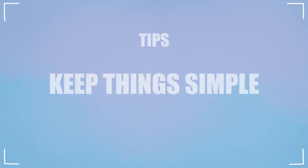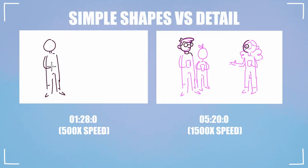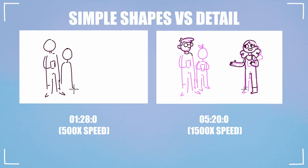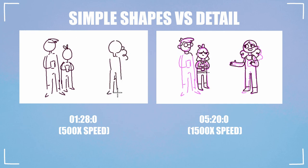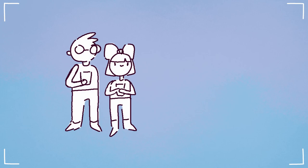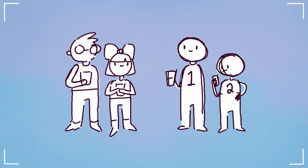My biggest tip when storyboarding would be to keep things simple. You don't want to draw all the details of your character in every panel, because chances are you will change or get rid of a lot of drawings as you board, and adding unnecessary detail wastes time you could spend doing something else. In this storytime, there are a lot of filler characters in the backgrounds, so I can either stick to basic shapes or put a number on their torso to keep track of their position in the scene, rather than drawing their full outfits every time.